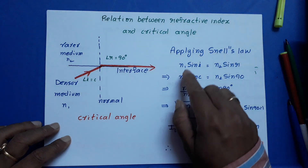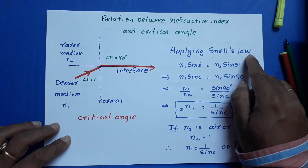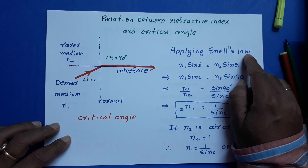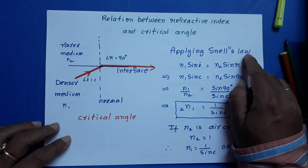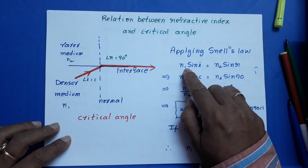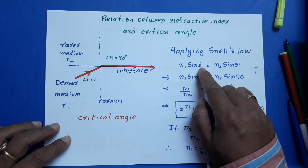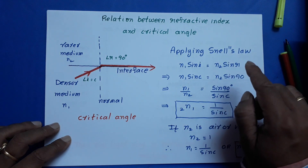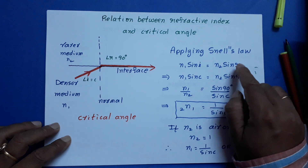Now remember Snell's law — here you apply it. What is the first form of Snell's law? Sin i by sin r is equal to constant. What is its second form? N1 sin i is equal to N2 sin r. That is its second form.